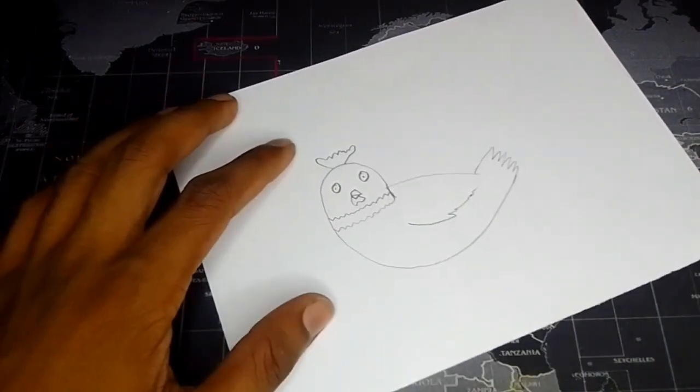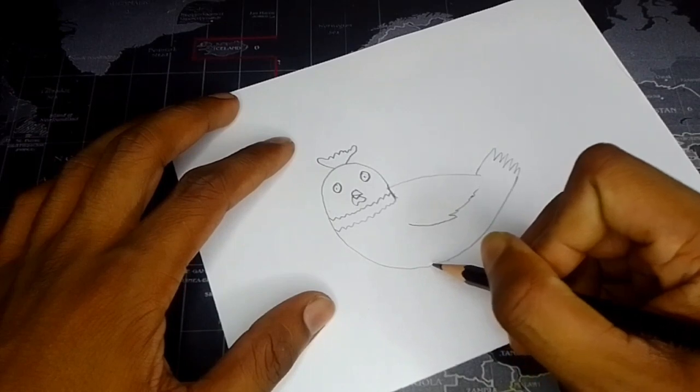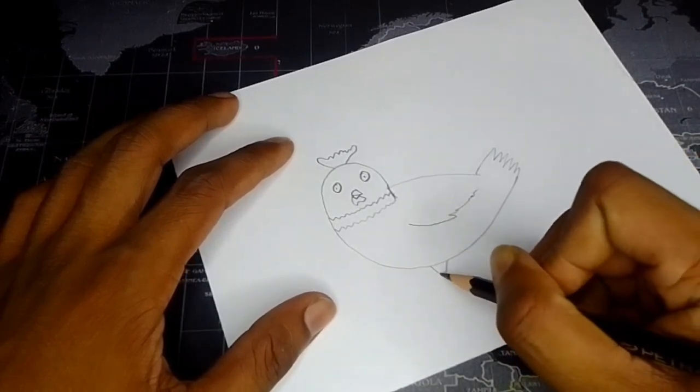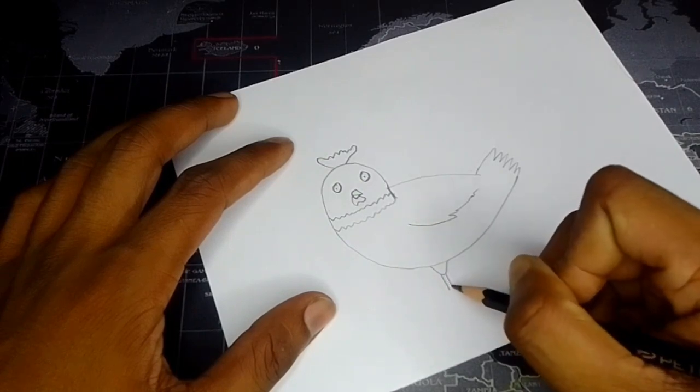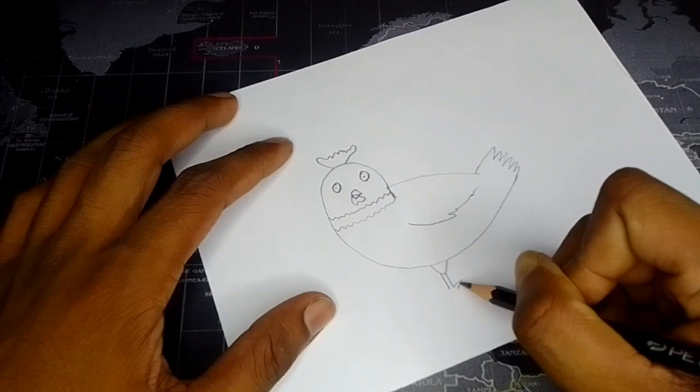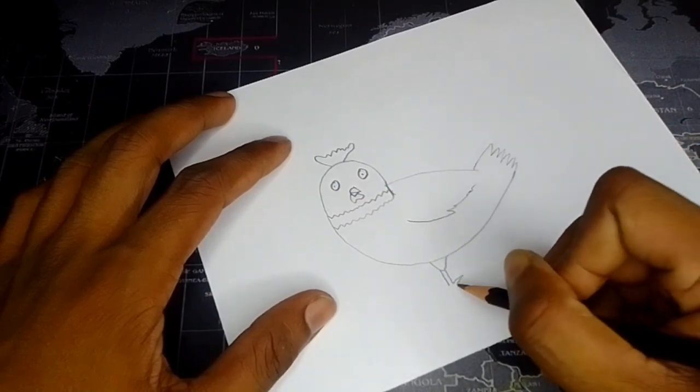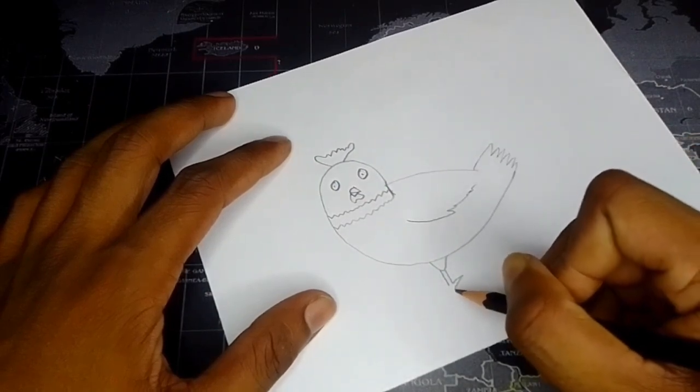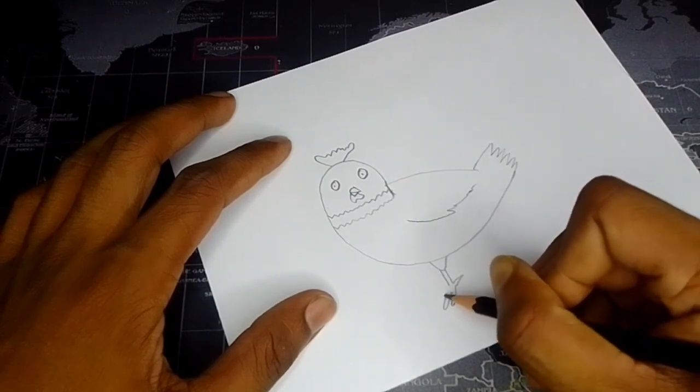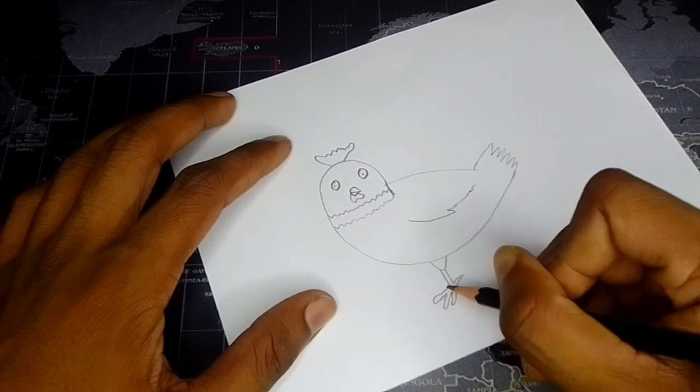And then try to make the leg like this one. In the back, a little one. Then come here like this, one little big one, two, and the other one. So the first leg is done.